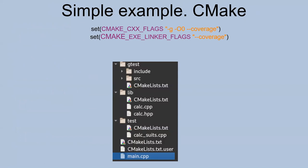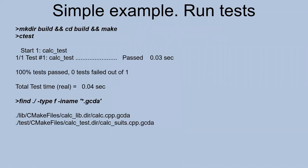Our project has this structure. We have the GTest library, our lib folder with header and CPP files, and a test project where we execute tests and the main function. I use CMake and add some flags: disable optimization and add coverage flags for the compiler and linker. Then make a build using CMake and run CTest. We see that the tests pass.